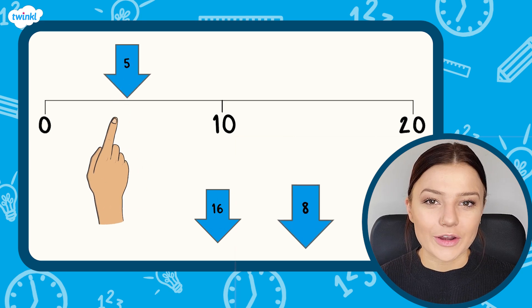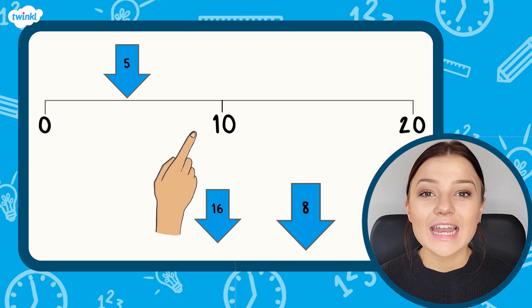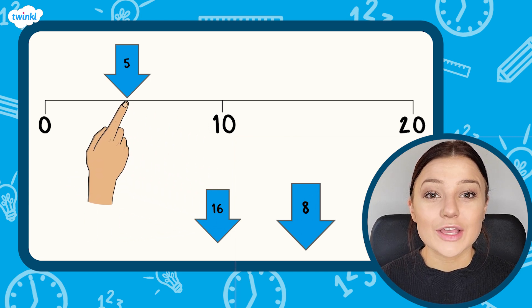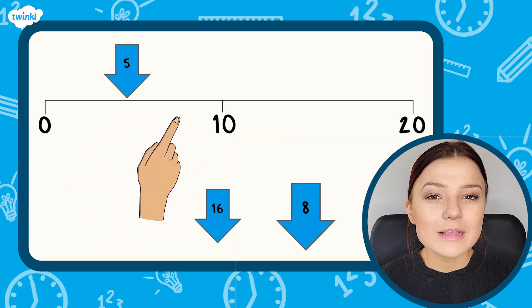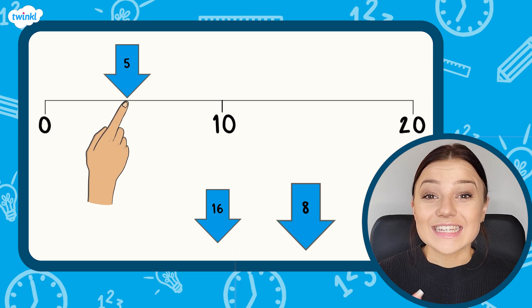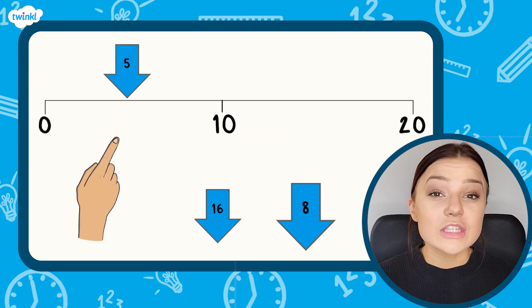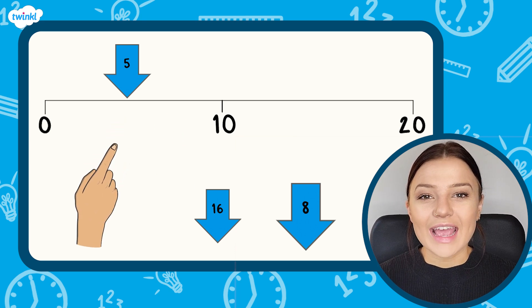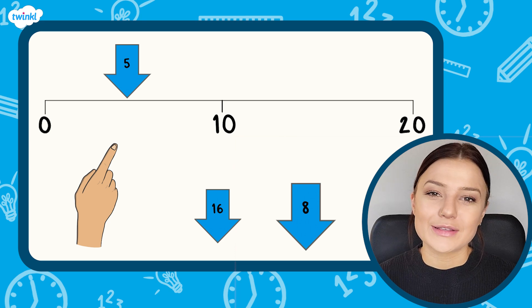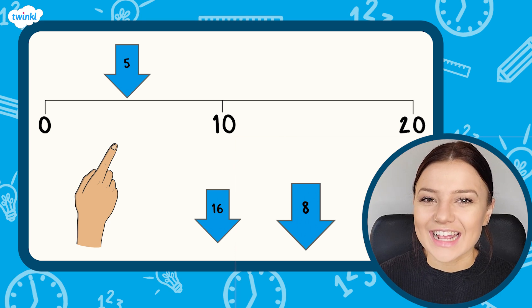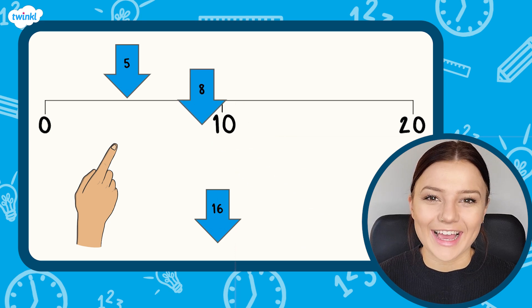The next arrow has the number 8 on it. 8 is less than 10 but more than 5, so the arrow needs to point somewhere between these two numbers. 8 is 3 more than 5 but 2 less than 10, so 8 needs to go slightly closer to 10. I think 8 is approximately here.